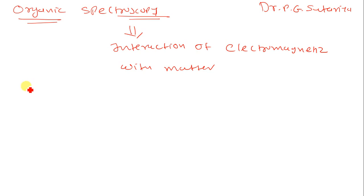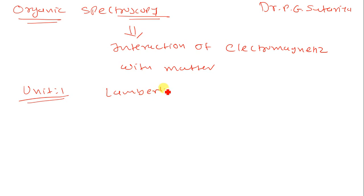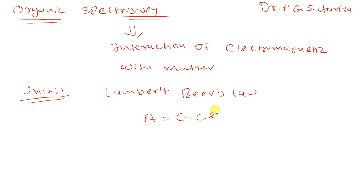In UV Spectroscopy, we started Unit No. 1, which includes Lambert-Beer's Law. Lambert-Beer's Law states that A is equal to Epsilon C into L, where A is absorbance, Epsilon is molar absorptivity, C is concentration, and L is the path length.